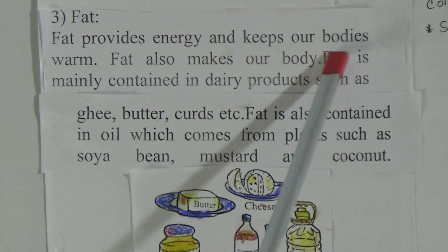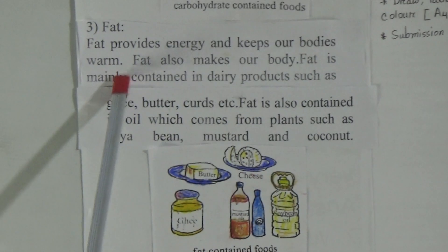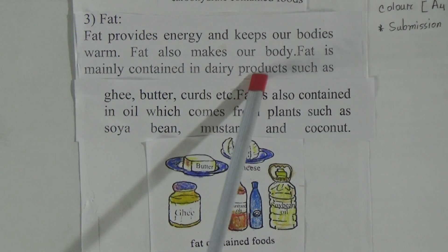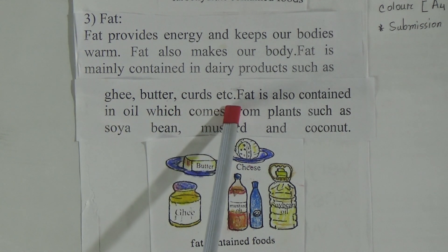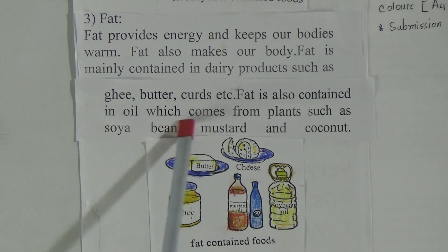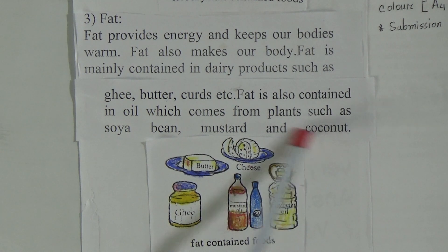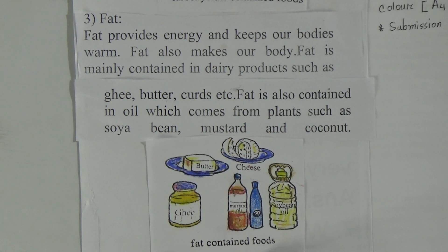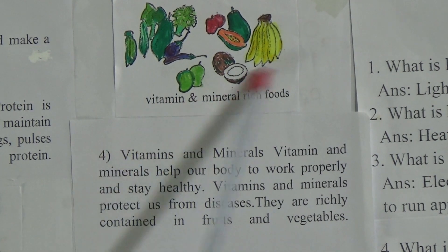Then fat. Fat provides energy and keeps our bodies warm. Fat is mainly contained in dairy products such as ghee, butter, curds, etc. Fat is also contained in oil which comes from plants such as soybean, mustard, and coconut. You can see here — these are fat-containing foods.